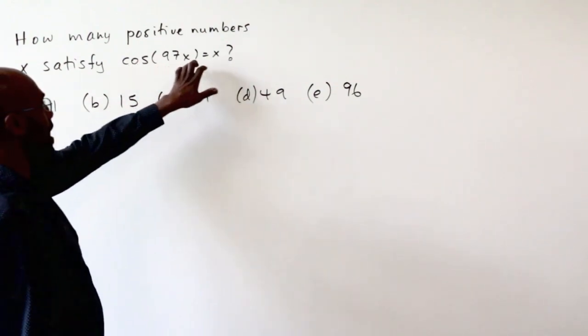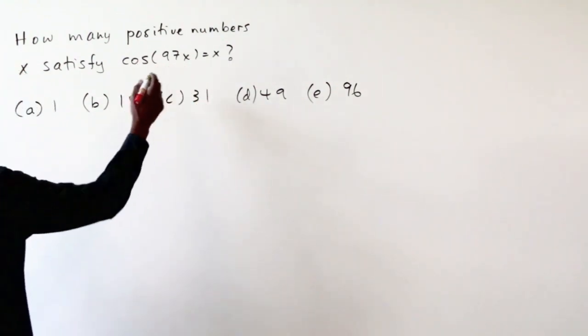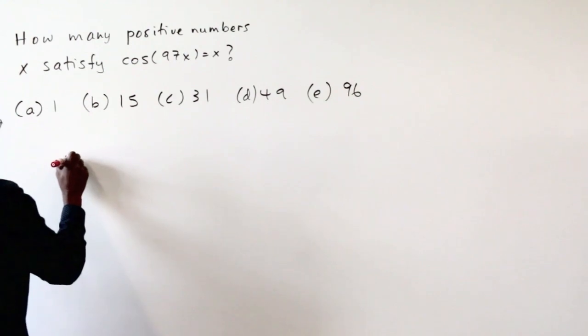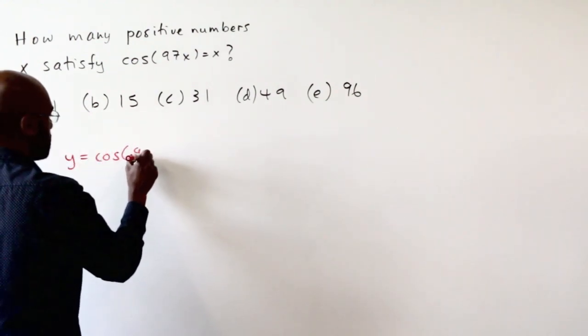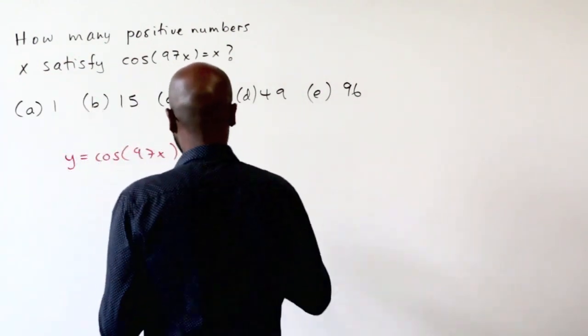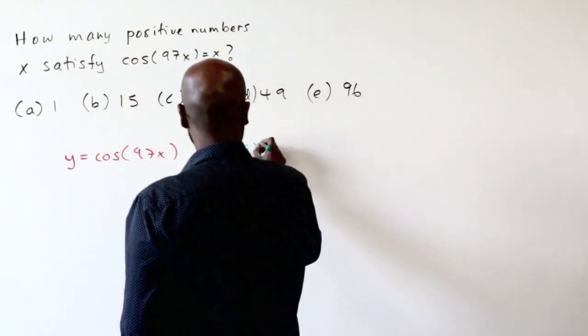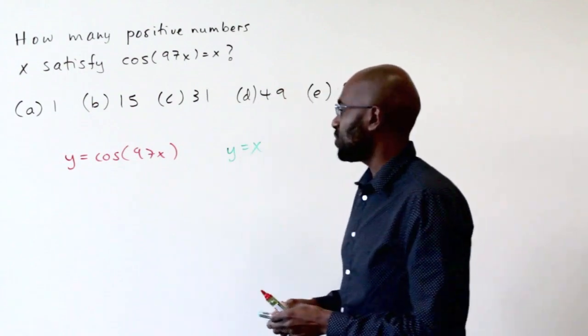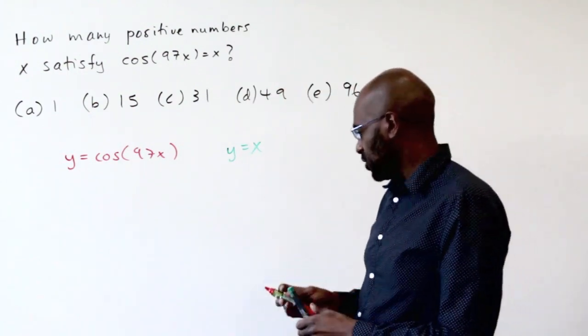Well, what we can do is think about the graph of this thing and the graph of the two functions. So I'll look at the graph of y equals cosine 97x and the graph of y equals x. Now every time that these graphs intersect, we'll get a solution to this equation.